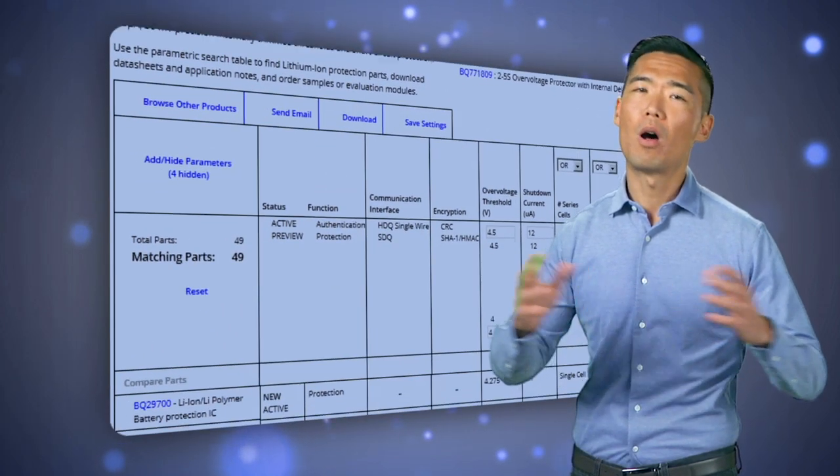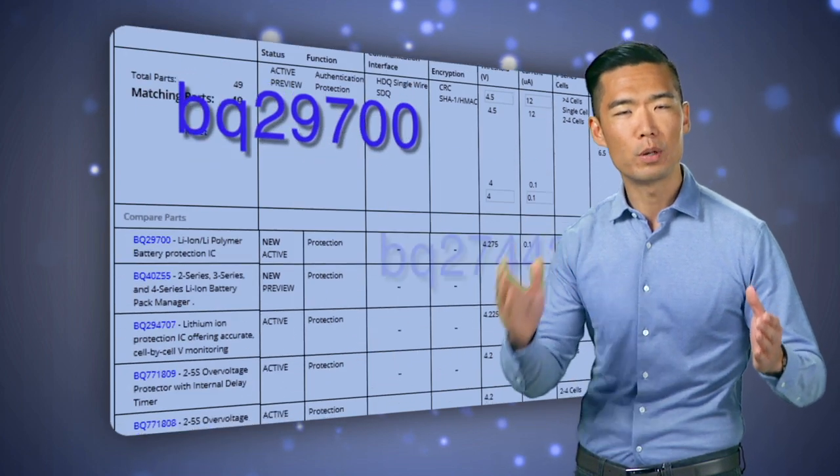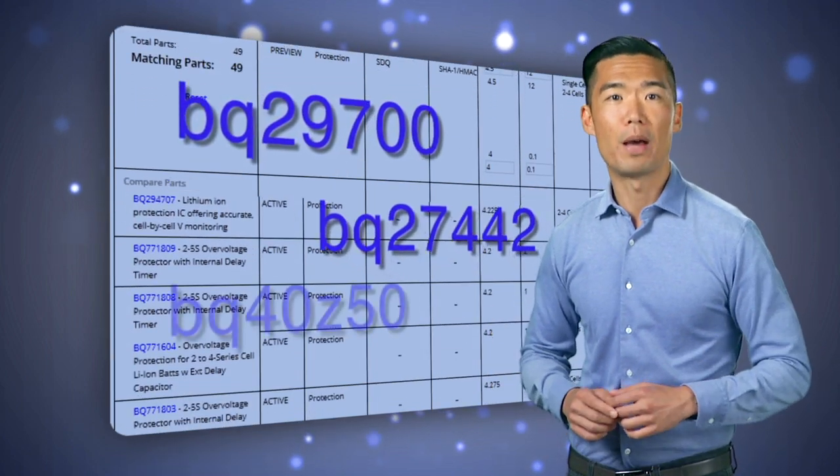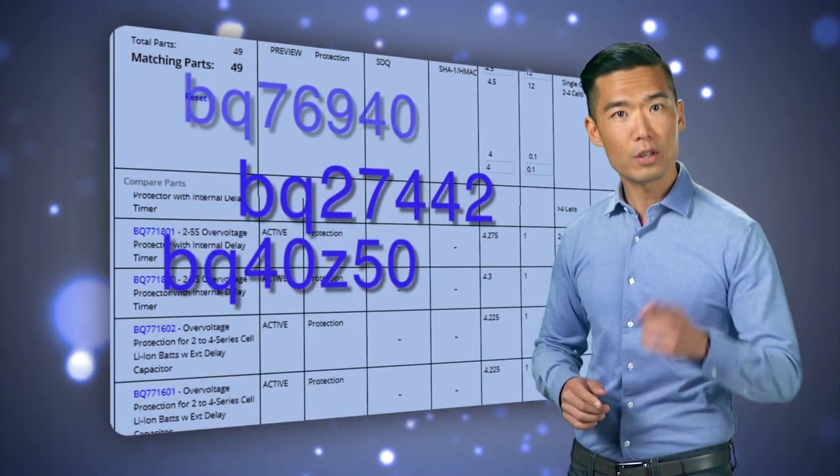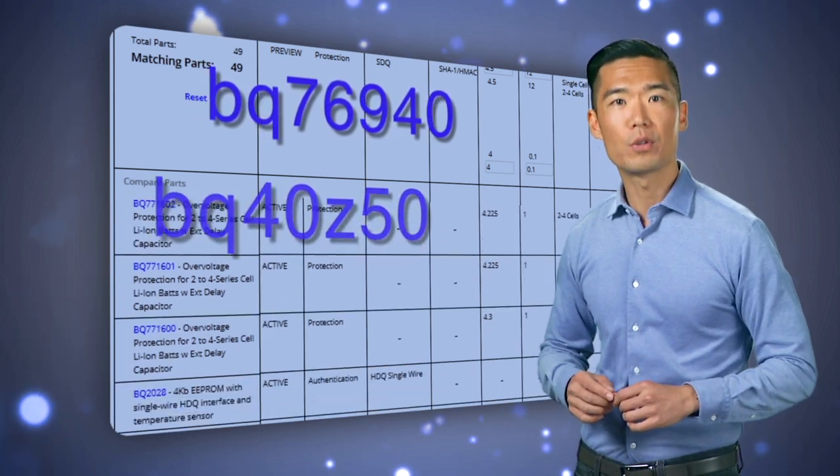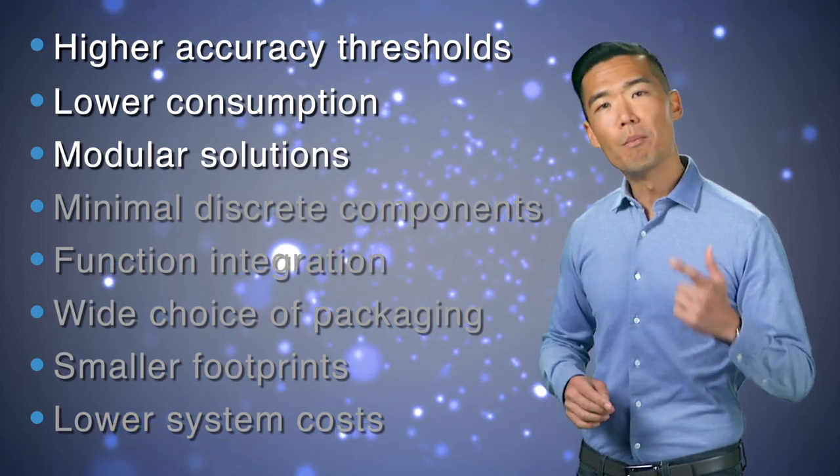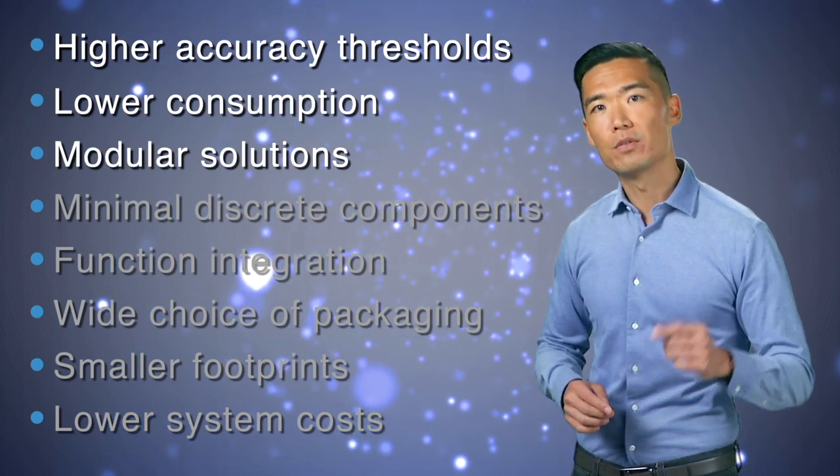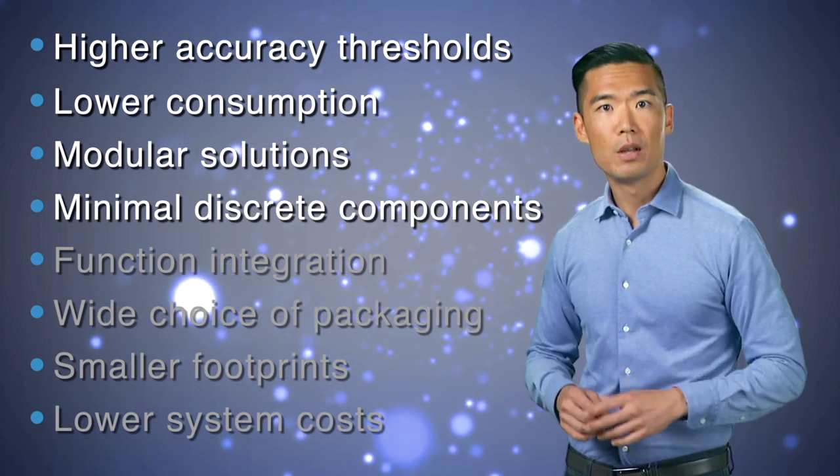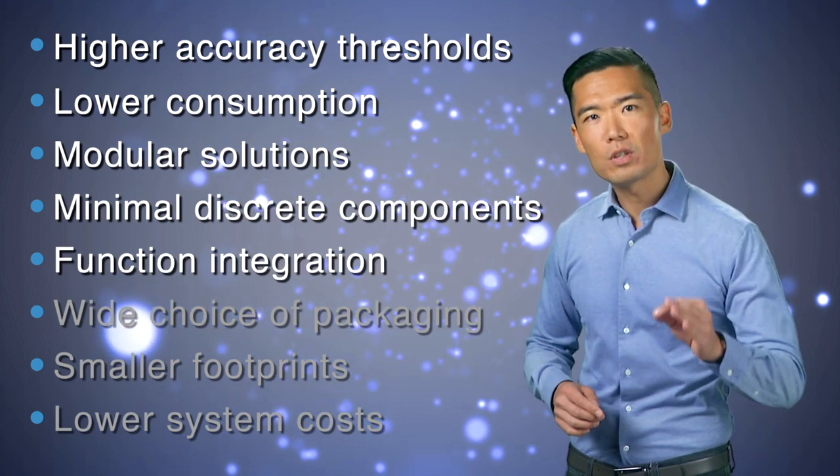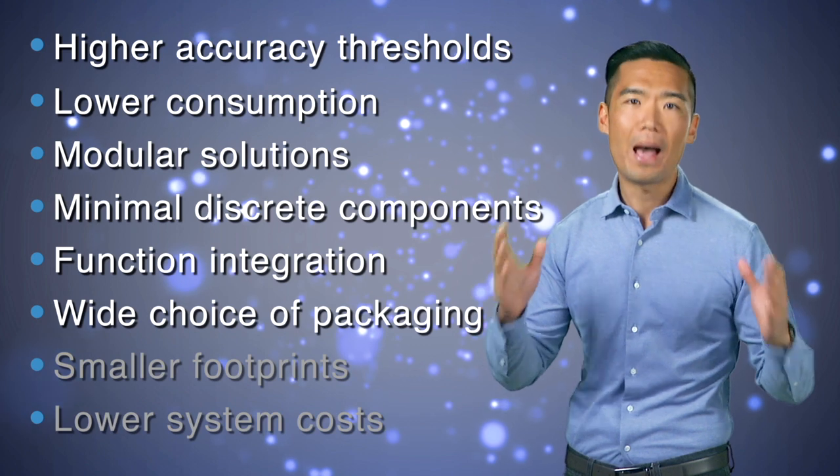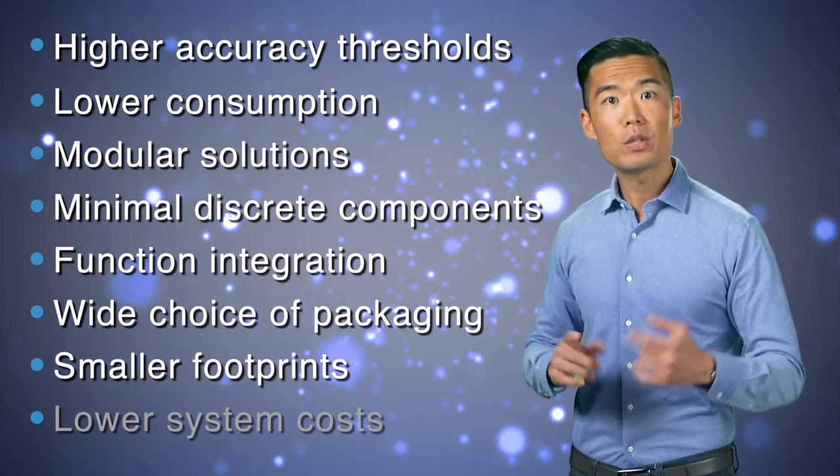Texas Instruments offers a broad portfolio of differentiated and superior products that facilitate these battery safety features, giving designers like you the power to improve the overall safety of your applications. From higher accuracy protection thresholds and lower power consumption, to modular solutions that are value optimized for different battery sizes and a minimum of discrete components, to the integration of several of these functions in a broad menu of package types that save board space and overall system cost.